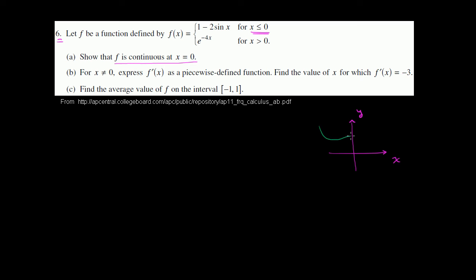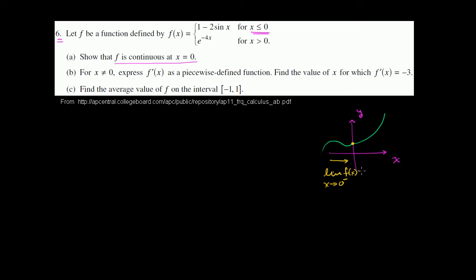Let's say this is our function — it might look something like this, and then something like that. In order for it to be continuous here, the limit as we approach 0 from the left should be equal to the value of the function at 0, which should also equal the limit as we approach 0 from the right.